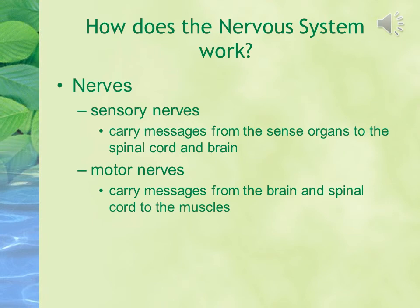There are two types of nerves: sensory nerves and motor nerves. Sensory nerves carry messages from the sense organs to the spinal cord and brain. Motor nerves carry messages from the brain and spinal cord to the muscles.